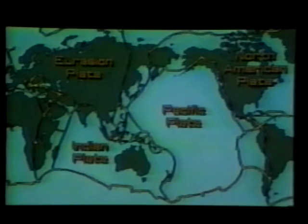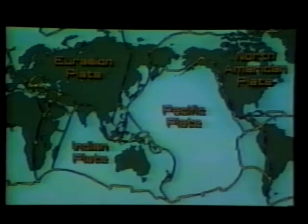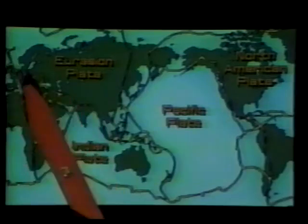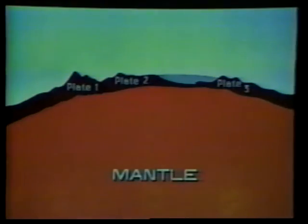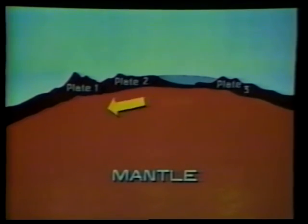Since that discovery, scientists have come up with another idea — the plate tectonic theory — that helps to explain the movements of the Earth's crust. The plate tectonic theory suggests that the Earth's crust is actually made up of about 20 pieces called plates. These plates are floating on the mantle, which is flowing slowly, causing the plates to move. The movement of the plates causes movement of the oceans and continents.